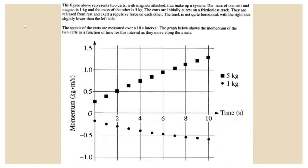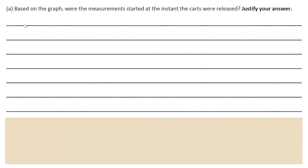We actually do have magnets like this in our lab. Had you been in class, you would have performed an experiment like this. This experimental-focused question gives us an example of a perfectly reasonable experimental setup for this kind of situation. This is the graph. I'd like you to take a second to really look at the details. The key thing to notice is that it's a graph of momentum versus time. The first question asks: based on the graph, were the measurements started at the instant the carts were released? Justify your answer. Pause this video and answer this question.